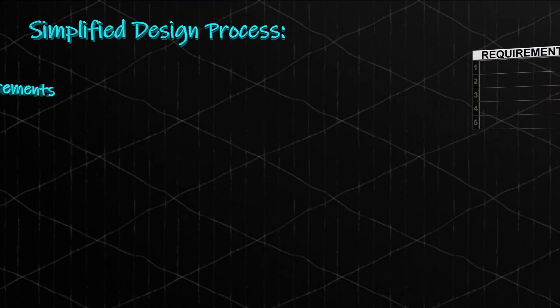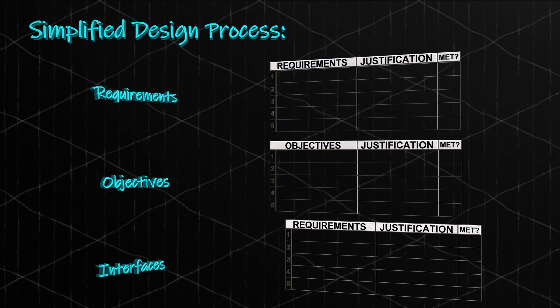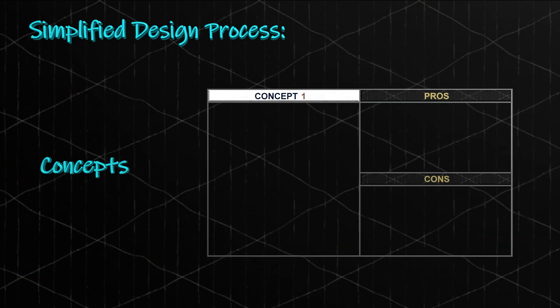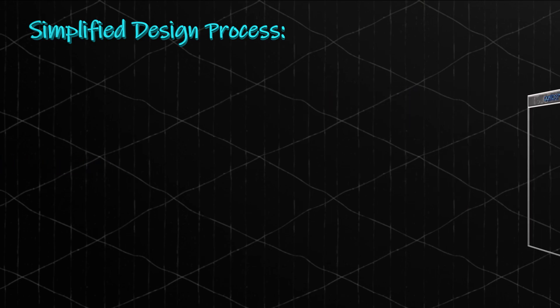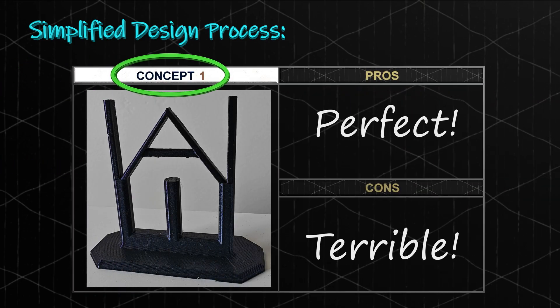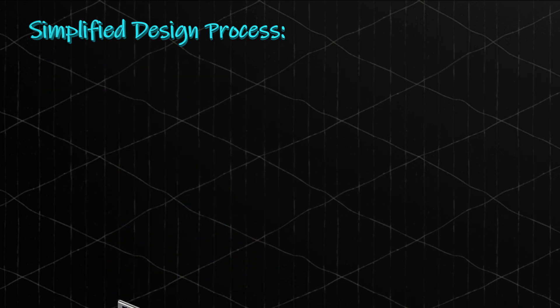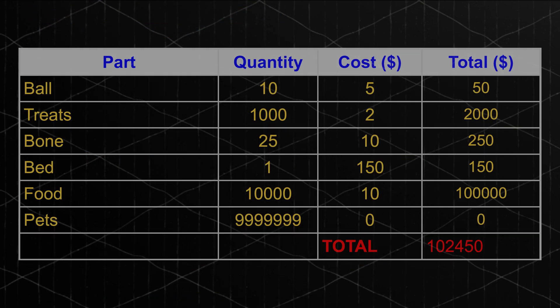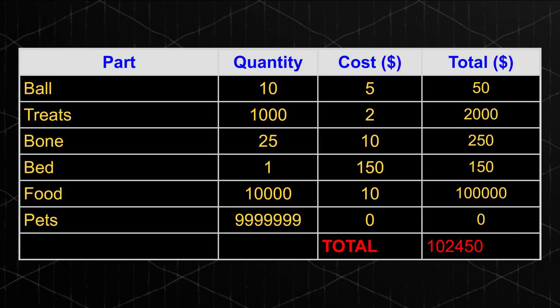At the start of every project, we will first go over the requirements, objectives, and interfaces for the project. Afterwards, we will weigh the pros and cons of different concepts that may satisfy the defined needs. Once the concept is chosen, the video will move on to design and creation or purchase of the product. Finally, we will go through and determine if we did or did not meet each of our requirements, objectives, and interfaces, adding in a cost breakdown at the very end.